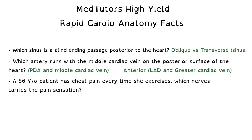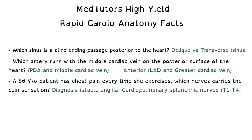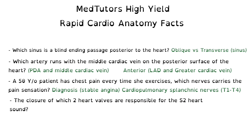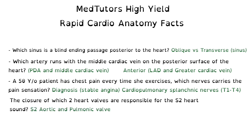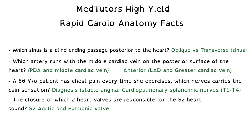A 50-year-old patient has chest pain every time she exercises. Which nerve carries the pain sensation? This patient most likely has angina pectoris. During these ischemic episodes, the pain is carried by the cardiopulmonary splanchnic nerve. The S2 heart sound is produced by closure of the aortic valve and the pulmonary valve. The S1 heart sound is the closure of the tricuspid valve and the mitral valve.